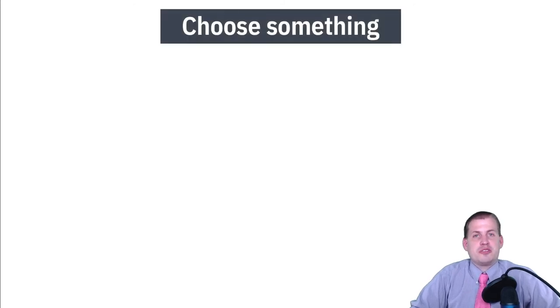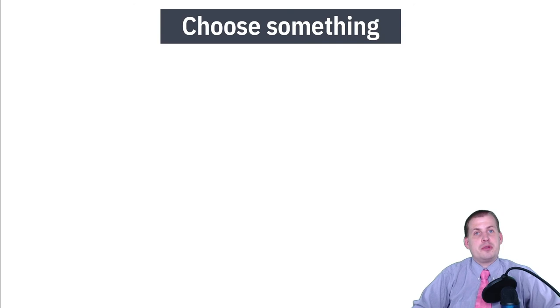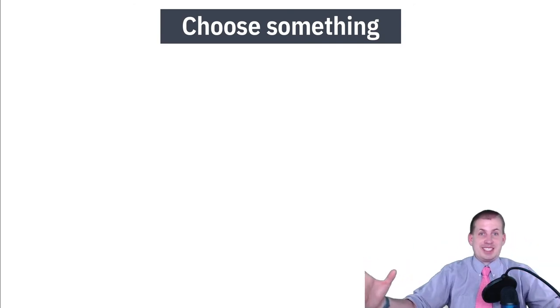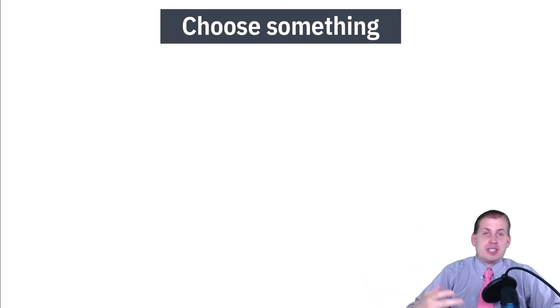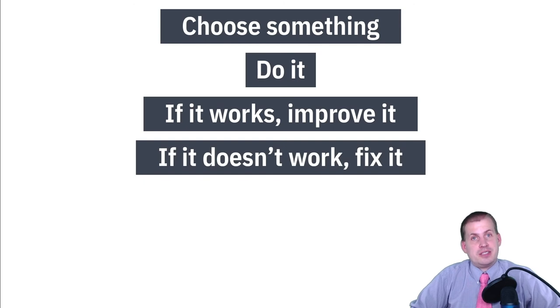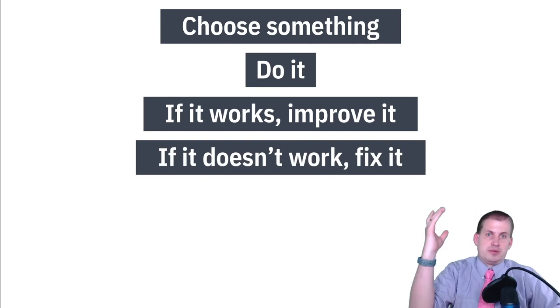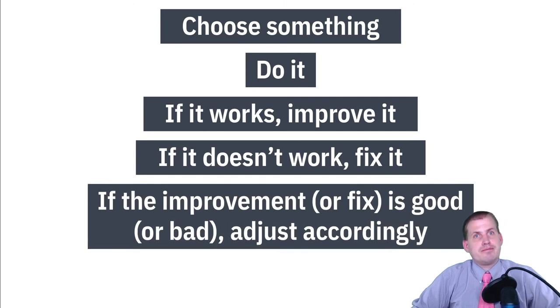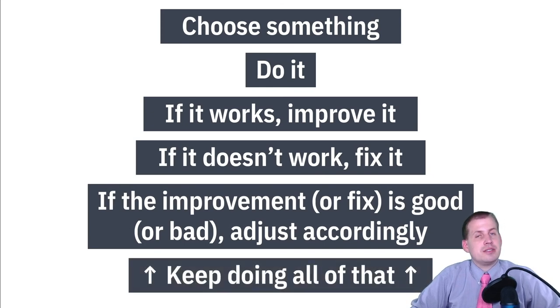The general process for good public policy follows this sequence: choose a policy based on evidence — maybe a randomized control trial, or finding the best equilibrium where supply and demand meet — then do it. If it works, improve it and make it better. You probably didn't do it right the first time, so reform, fix, and adjust it. If it doesn't work, go back and make incremental changes and send it back out into the world. Keep doing that over and over again until you reach good policy.